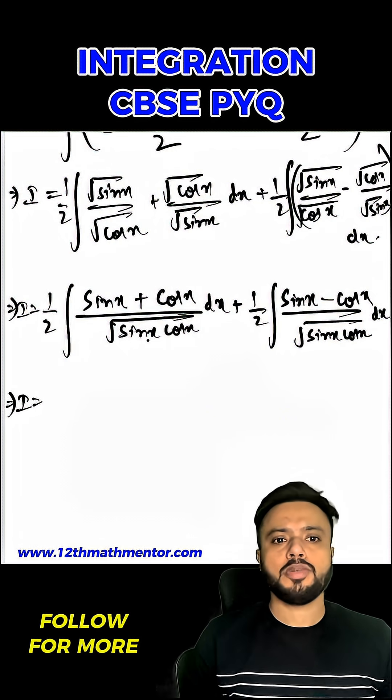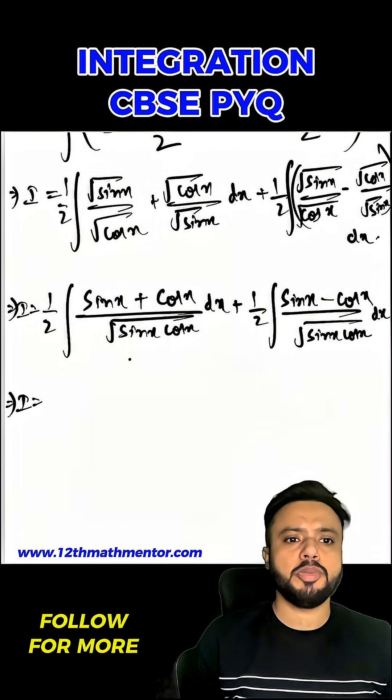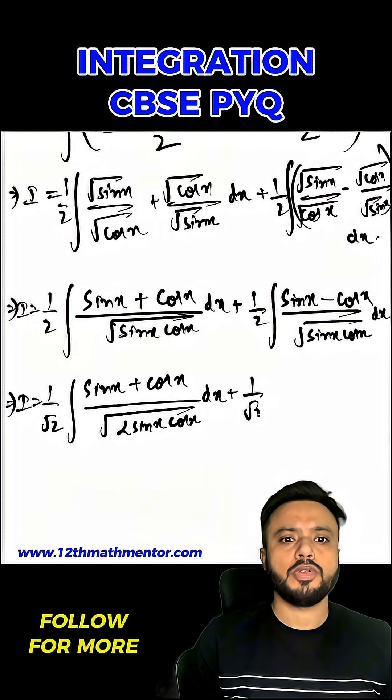So I will get 1 upon root 2 integral of sin x plus cos x upon root 2 sin x cos x dx plus 1 upon root 2 integral of sin x minus cos x upon root 2 sin x cos x.